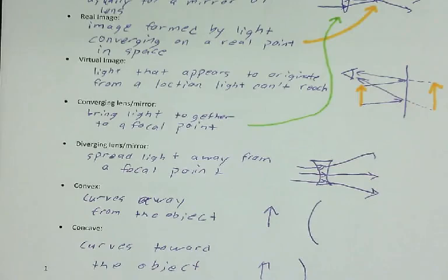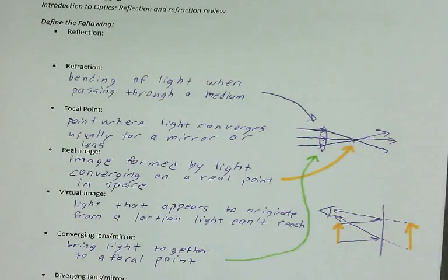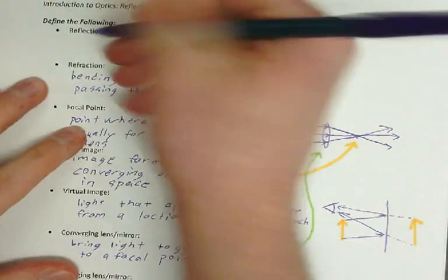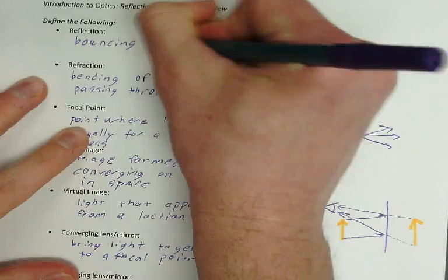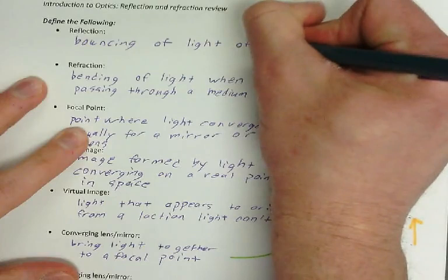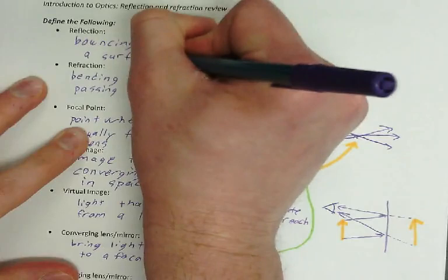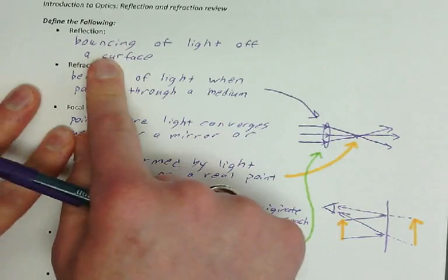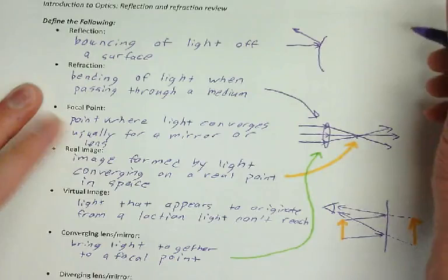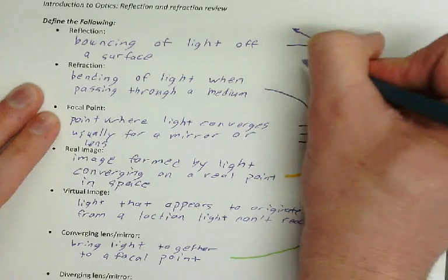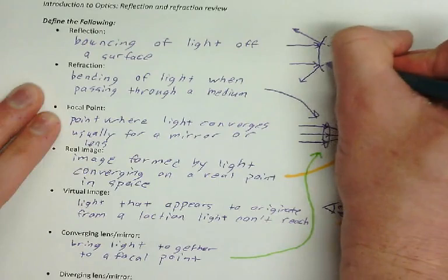Alright, we'll do the back page next time. See y'all. Reflection, the last one here, is light bouncing off of a surface. So reflection would be something like this. Light comes in and bounces off of the surface. It's going to go again. It's going to have to do with a focal point.